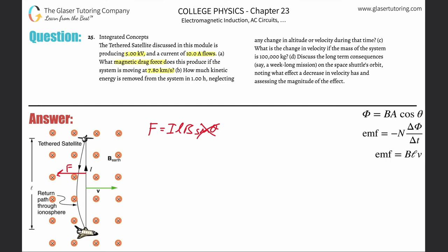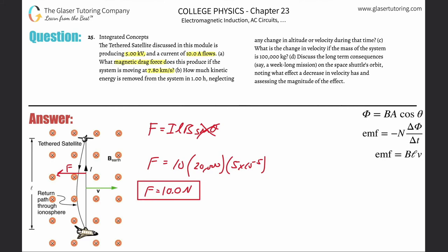The length of the tethered satellite wire — from the prior problem — is about 20,000 meters, and the current is 10 amps. So plugging in: 10 amps times 20,000 meters times 5×10⁻⁵ tesla gives a value of 10 newtons. That's the answer to letter a.